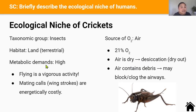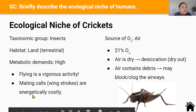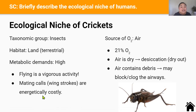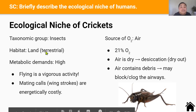Crickets have a high metabolic demand, which means they need a lot of energy to carry out necessary activities to survive. These activities include flying away from predators, because flying is a vigorous activity that needs a lot of energy, and also crickets need to make those distinctive mating calls. Male crickets stroke their wings against each other to attract female crickets, and these wing stroke behaviors require a lot of energy. So the cricket's gas exchange system needs to be as efficient as possible to obtain enough oxygen from air to meet these high metabolic demands.